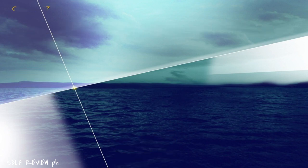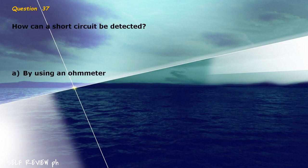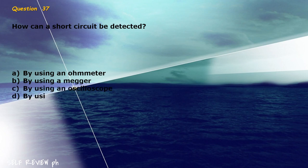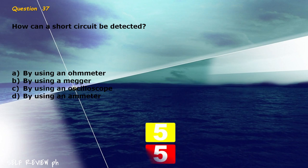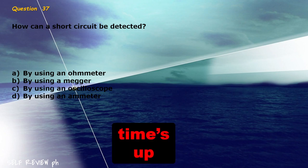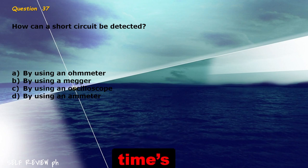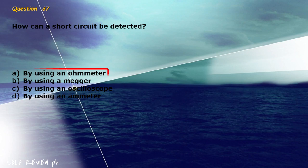Question 37: How can a short circuit be detected? A) by using an ohmmeter, B) by using a megger, C) by using an oscilloscope, D) by using an ammeter. The correct answer is letter A, by using an ohmmeter.